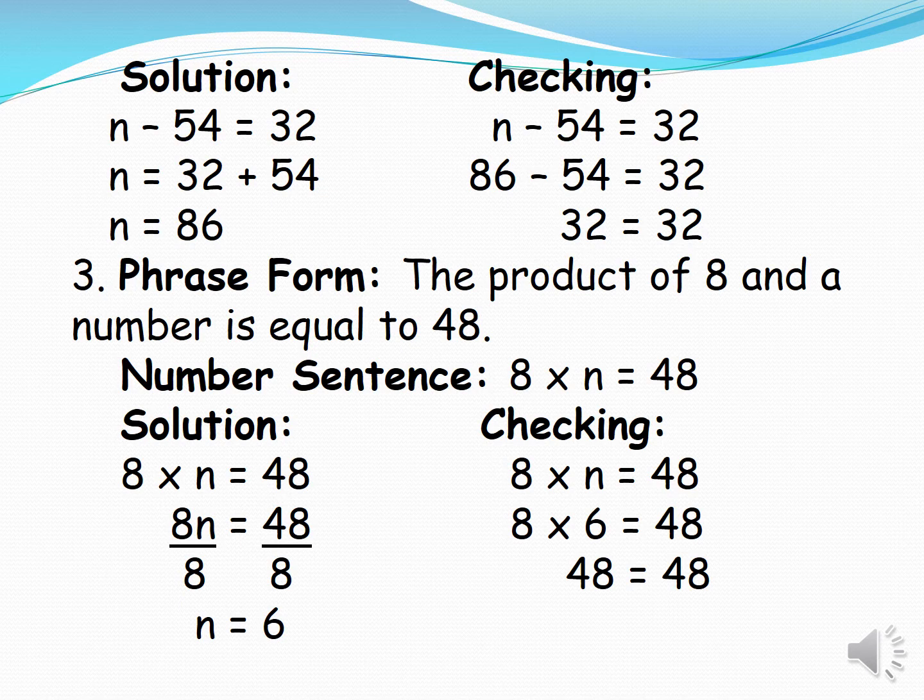We have here our checking. N minus 54 is equal to 32. Substitute again the n by our answer 86. So 86 minus 54 is equal to 32. 32 is equal to 32.